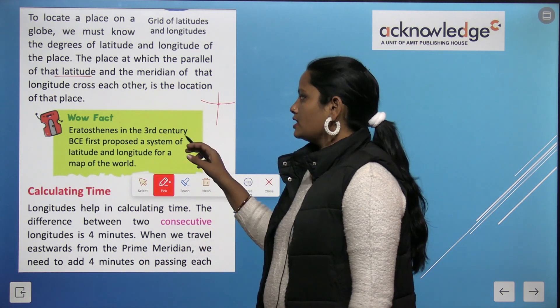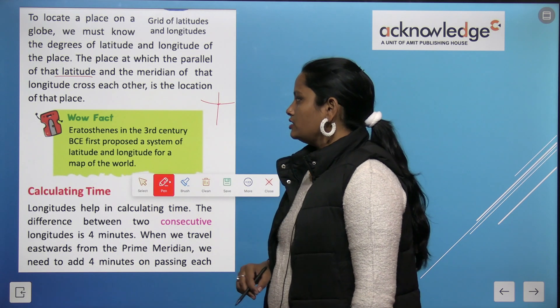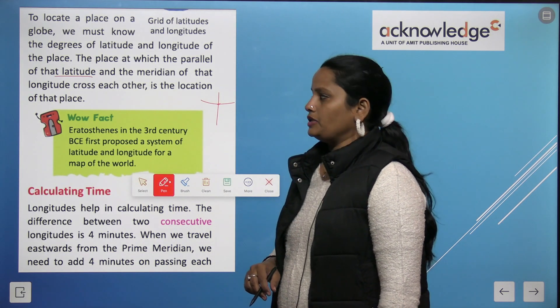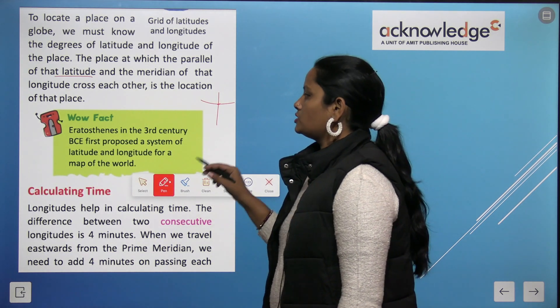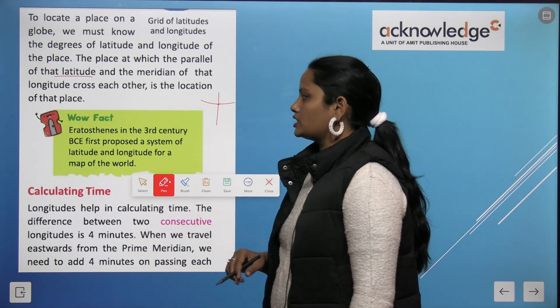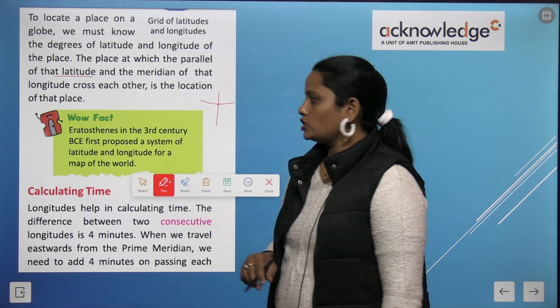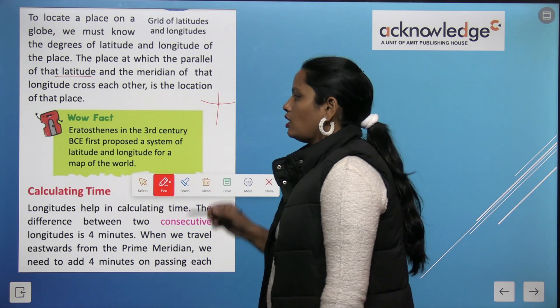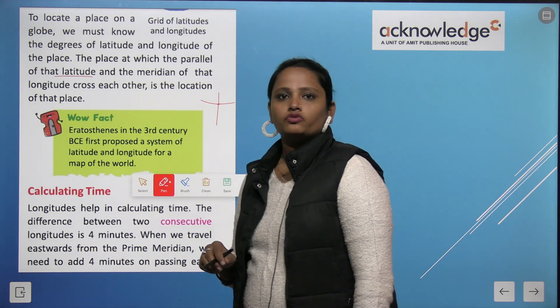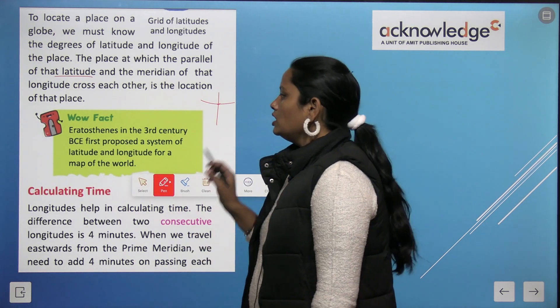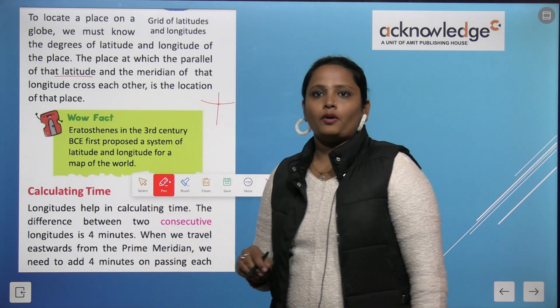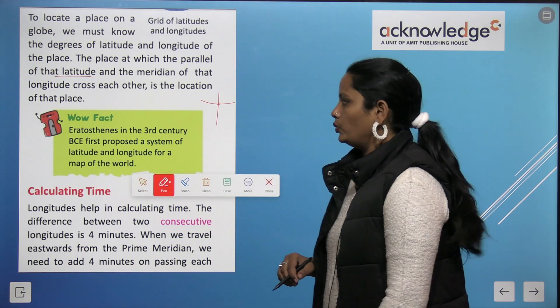Here is an interesting fact: Eratosthenes in the 3rd century BC first proposed a system of latitudes and longitudes for the map of the world.